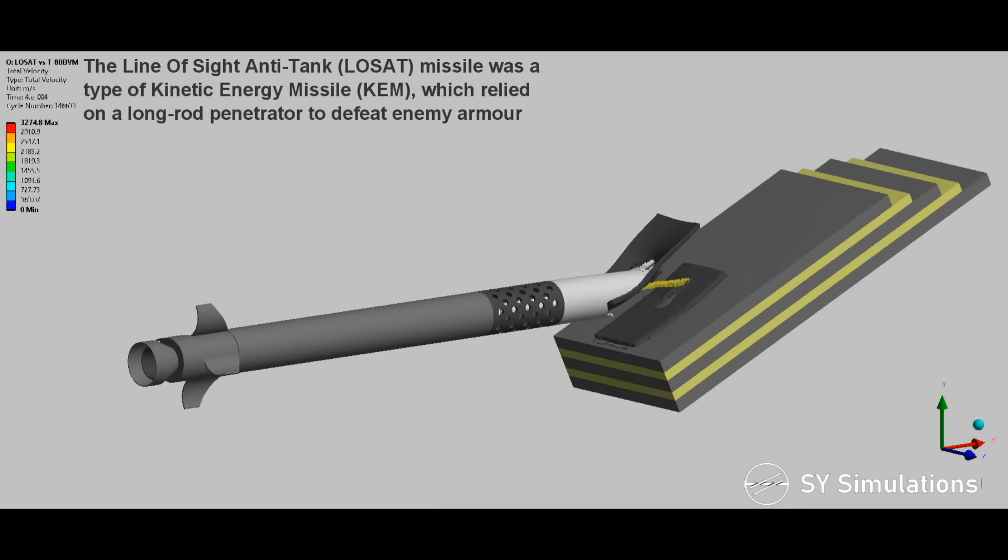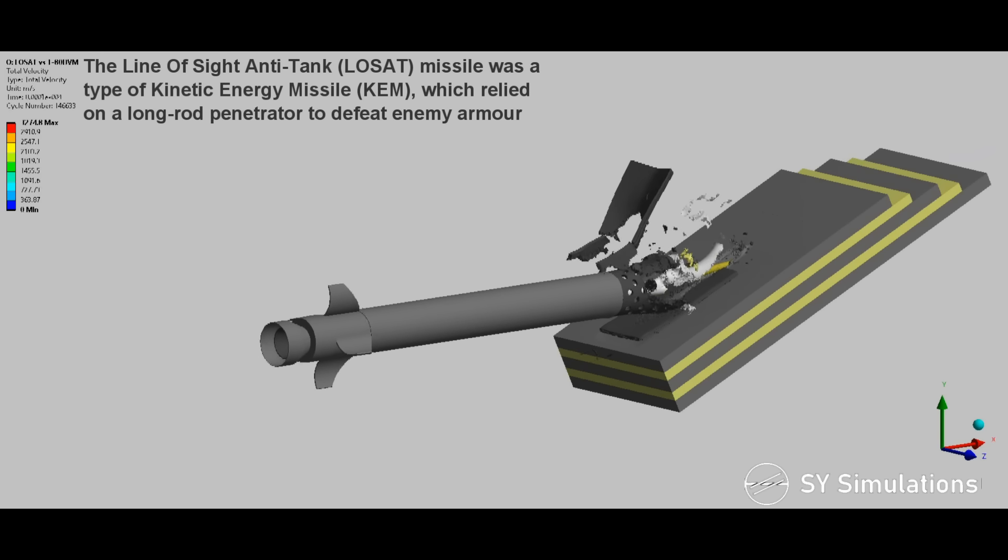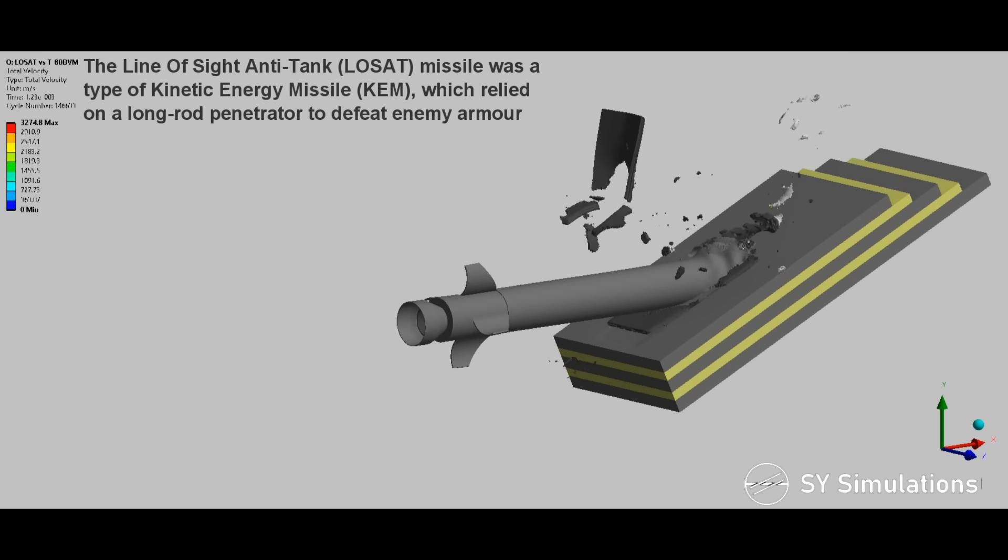The Line of Sight anti-tank missile was a type of kinetic energy missile which relied on a long rod penetrator to defeat enemy armor.